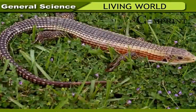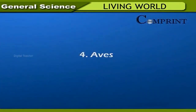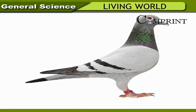Reptilia: the skin has scales and the heart is three-chambered — examples include lizard, crocodile, and cobra. Aves: the skin is covered with feathers; their forelimbs are modified as wings to enable flight, and the mouth is in the form of a beak. Their heart is four-chambered, they are warm-blooded animals, and their bones are filled with air. They are oviparous (egg-laying) — examples include pigeon, sparrow, and peacock.